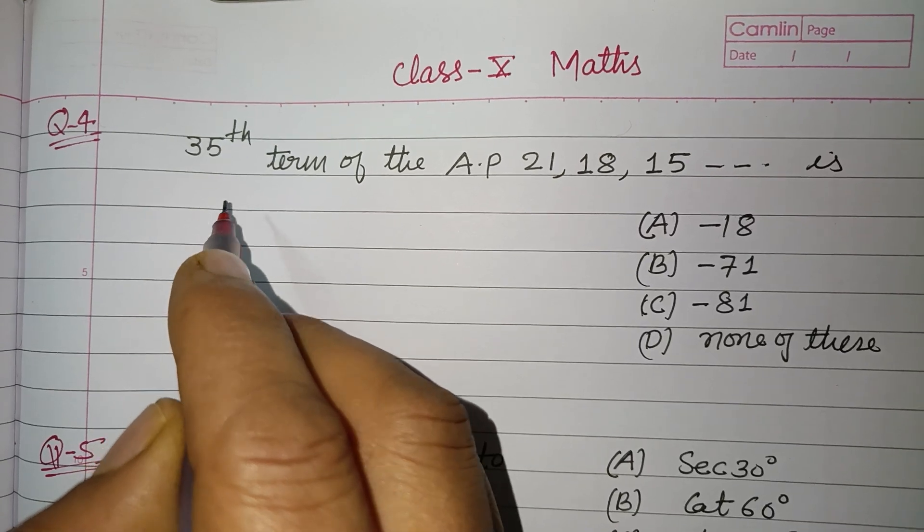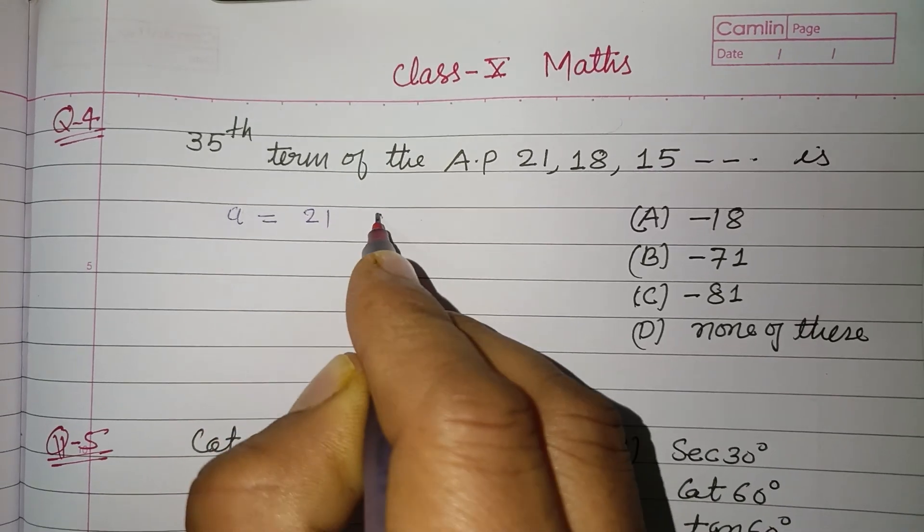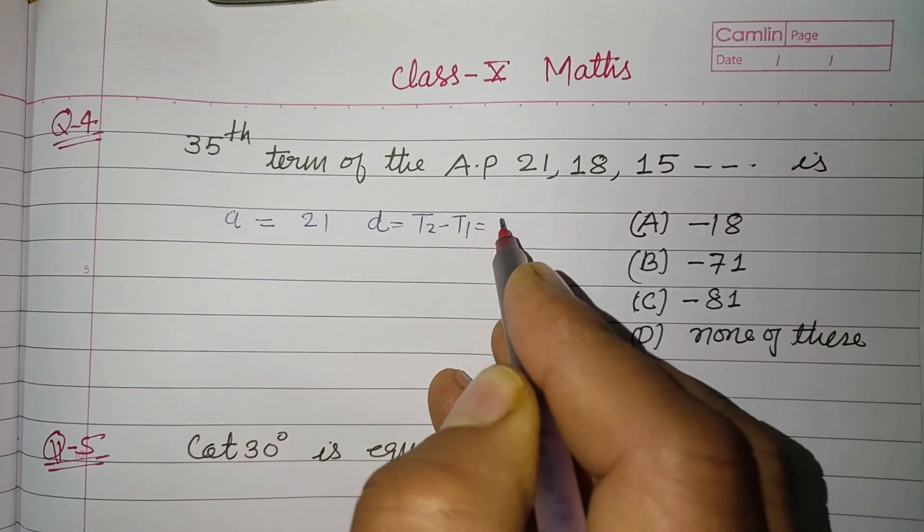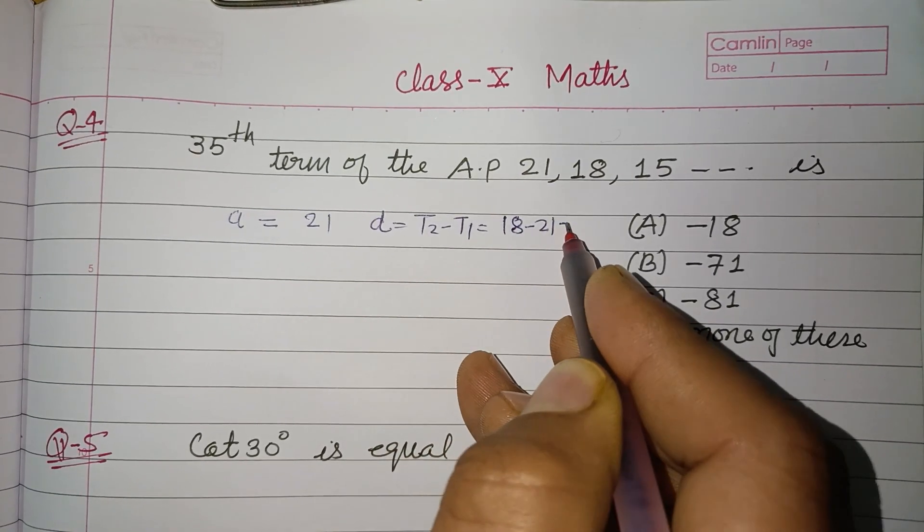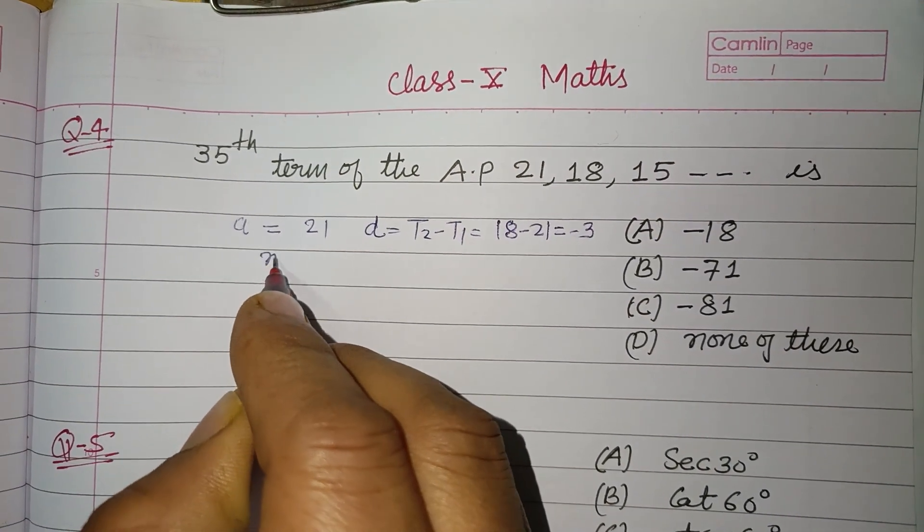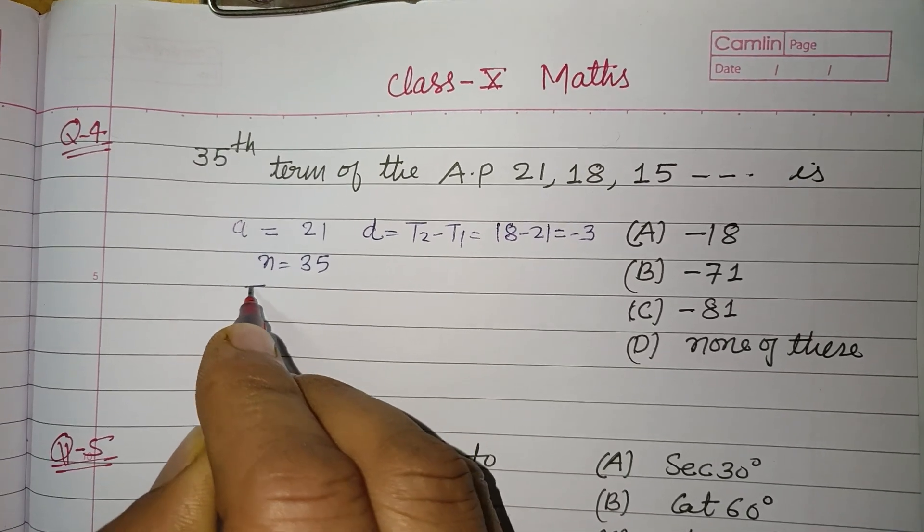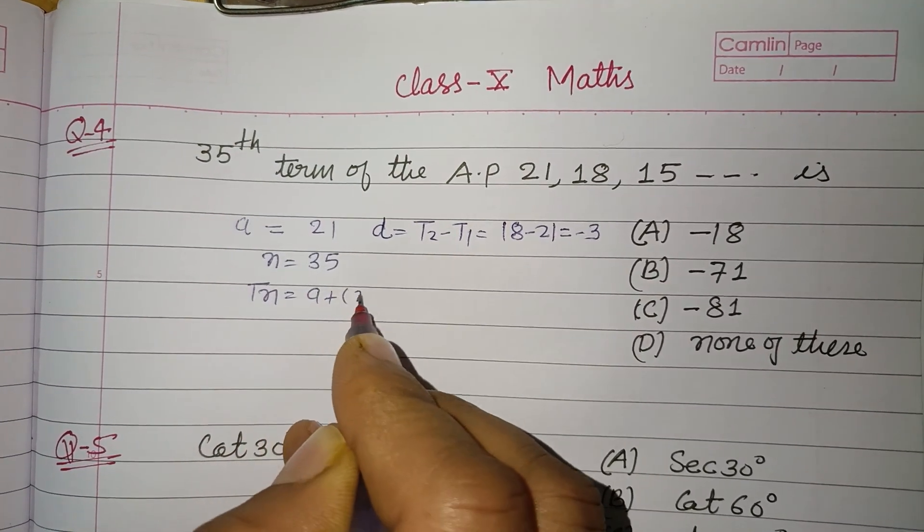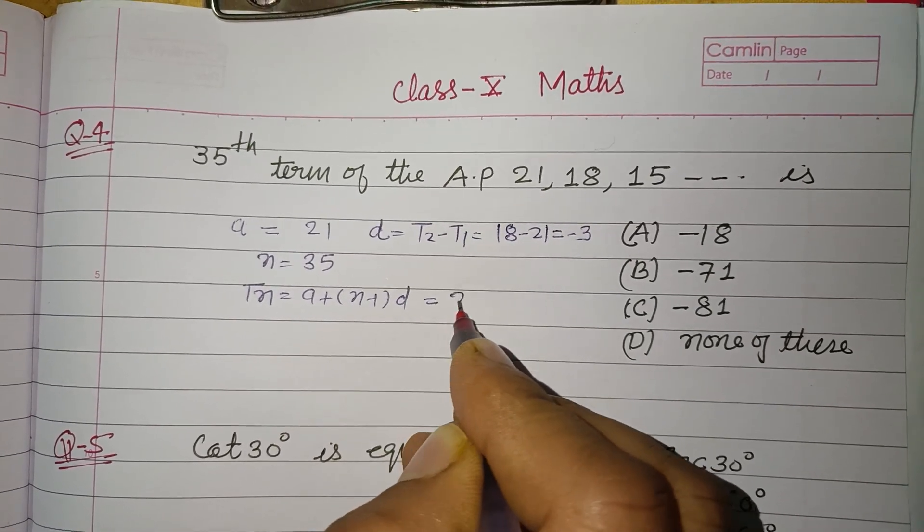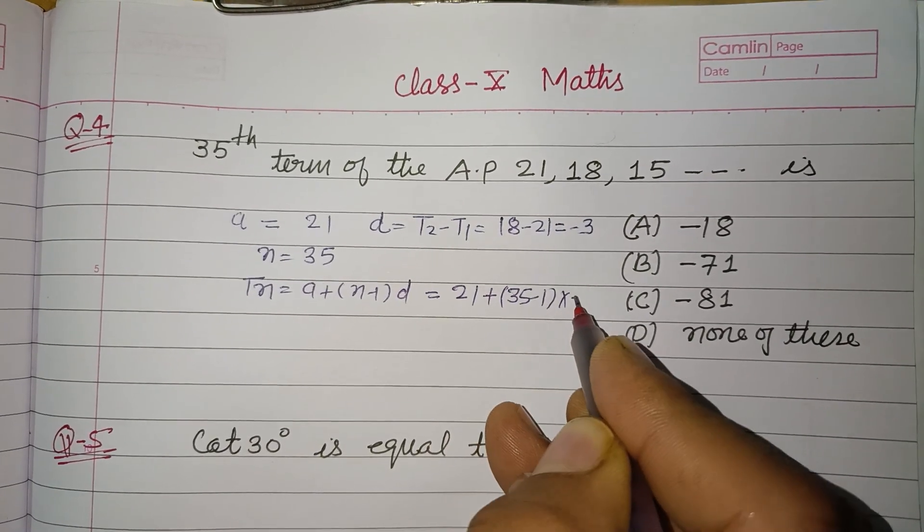So student, this is an AP. First term is given to us 21. Common difference is T2 minus T1, that is 18 minus 21, that is minus 3, and N is given to us 35. Therefore TN equal to A plus N minus 1 into D. A is 21, N is 35 minus 1 into D is minus 3.